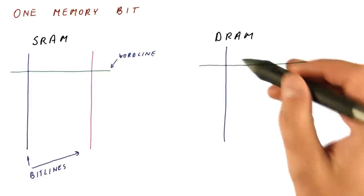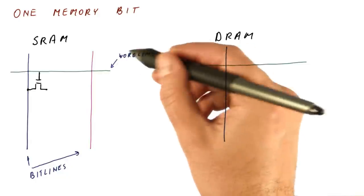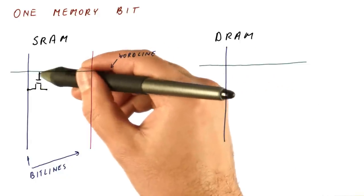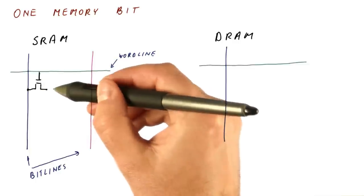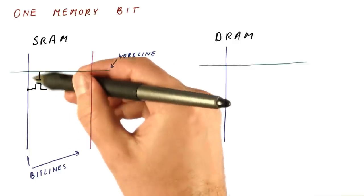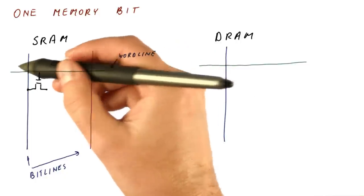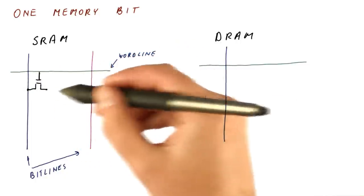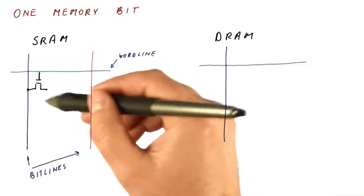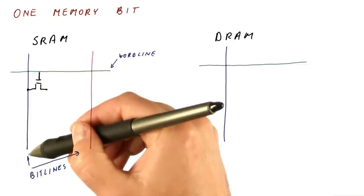DRAM will also have a word line and a bit line. What the word line does is it controls a transistor here that can open or close itself to connect the cell to the bit line. So the idea is that if we want to access this cell, we activate this word line, which opens this transistor, and now the memory cell is connected to the bit line.